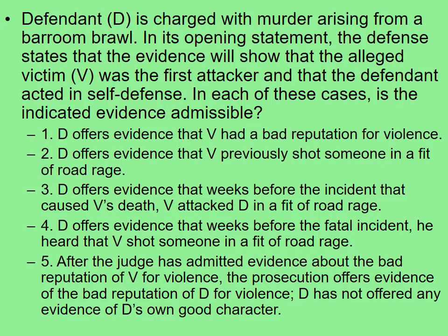The defendant hasn't yet offered any evidence of his own good character. We know from the earlier part of the rule that if a criminal defendant offers evidence of his or her own good character, the prosecutor can counter with a bad character witness. But what about when the defendant only offers bad character evidence of the victim, and doesn't offer good character evidence of his own character — what then?